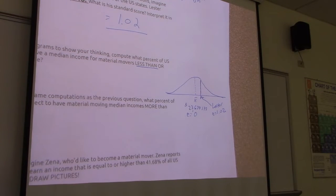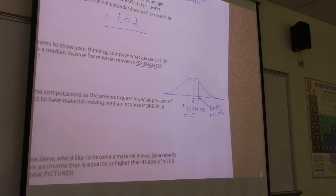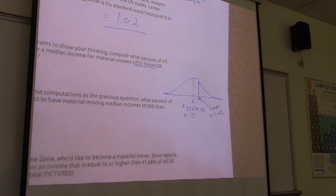Once we convert it to Z, we don't need to worry about the dollars, because we've turned it into a standard score. Sanity check: is our area going to be above or below 0.5?